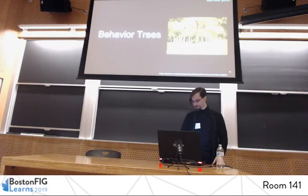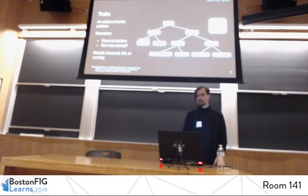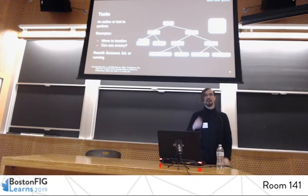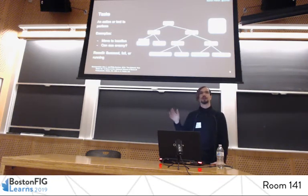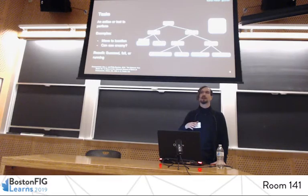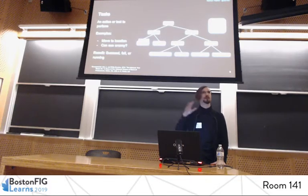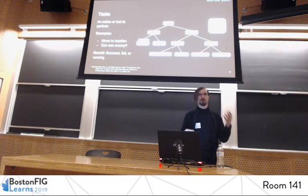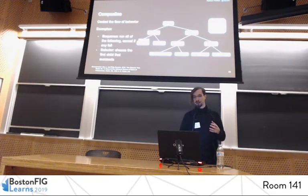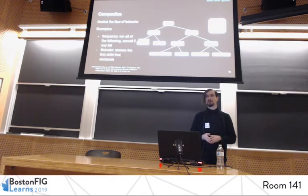How do behavior trees work? There are three types of nodes in a behavior tree: tasks, composite nodes, and decorators. This is just one kind of example — there are variations at various companies and in various theories of behavior trees. Tasks are the leaves of the tree. They're usually the actions you want to perform, and may also be conditions or checks that need to be performed before those actions can take place. Composite nodes are the internal nodes in the tree, and they control when and how the tasks run.